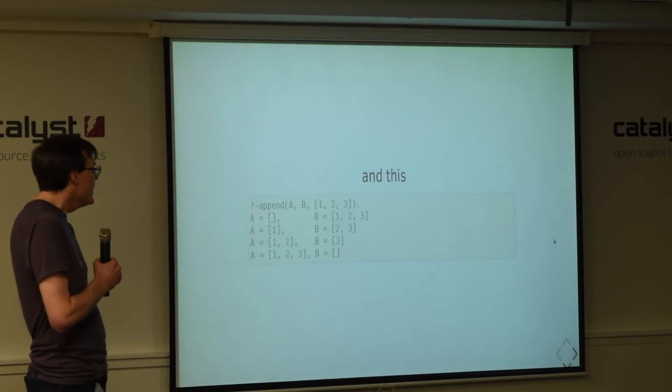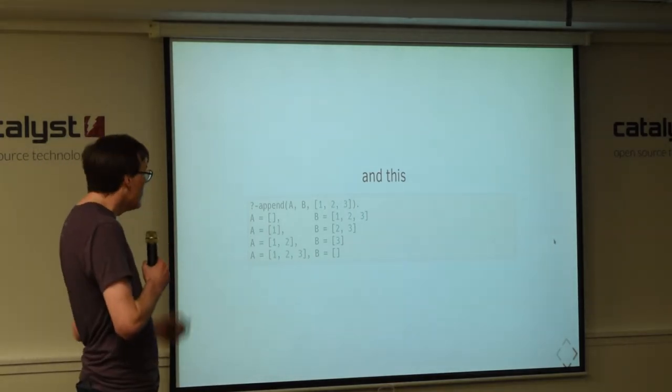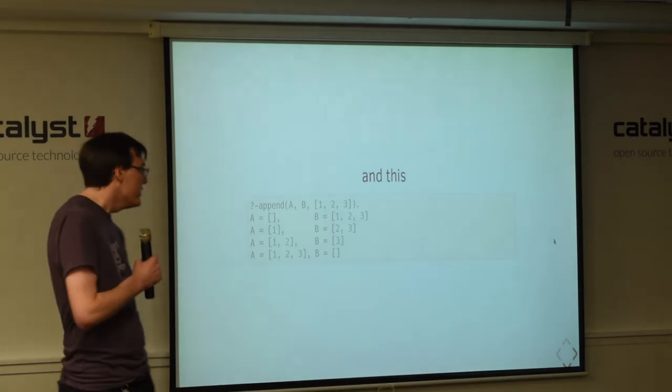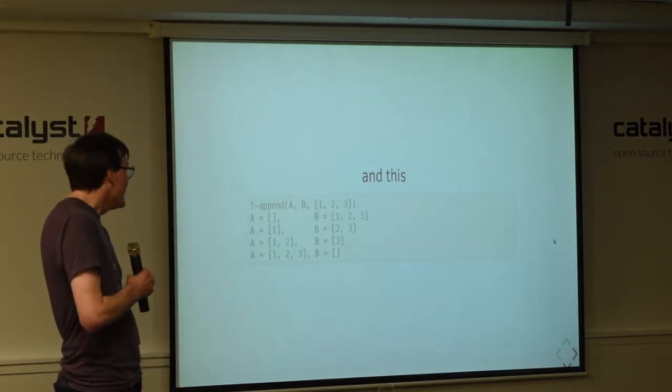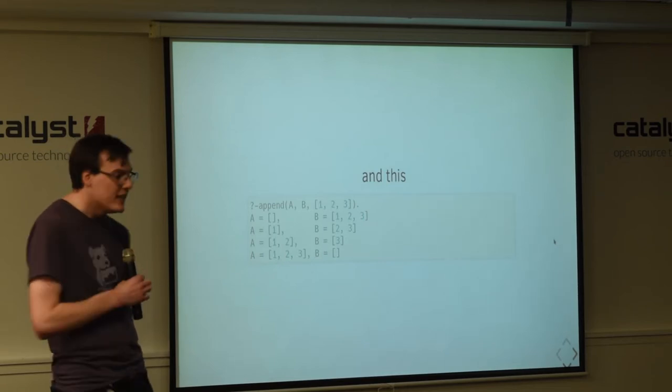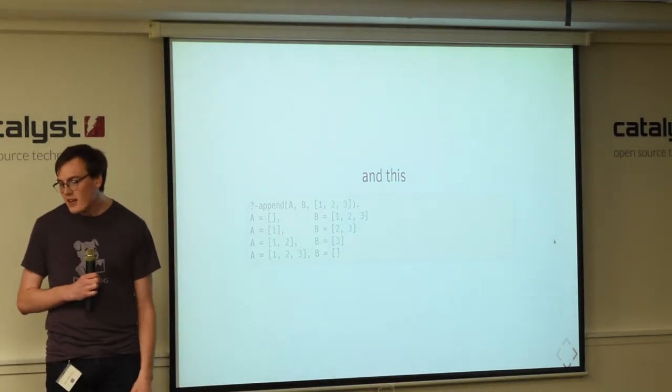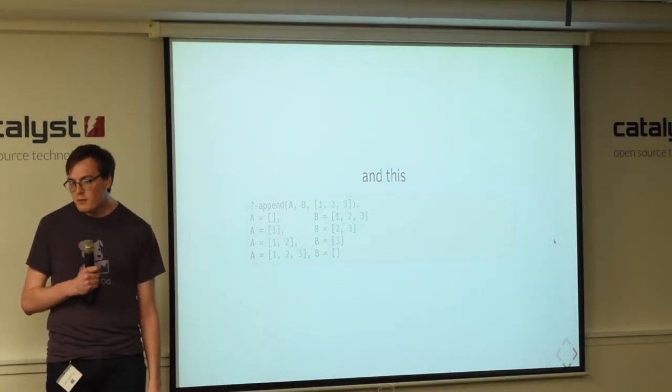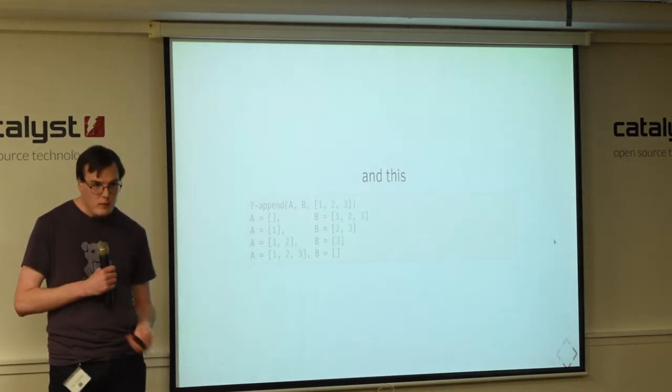So, if we give it the final result that we want, we can also ask it for what values of a and b do we need to give it to make this true. And, yeah, it can tell us all values of a and b that satisfy this fact. So, it gets really interesting, and it's a really bizarre different way of thinking about lists and appending to them.